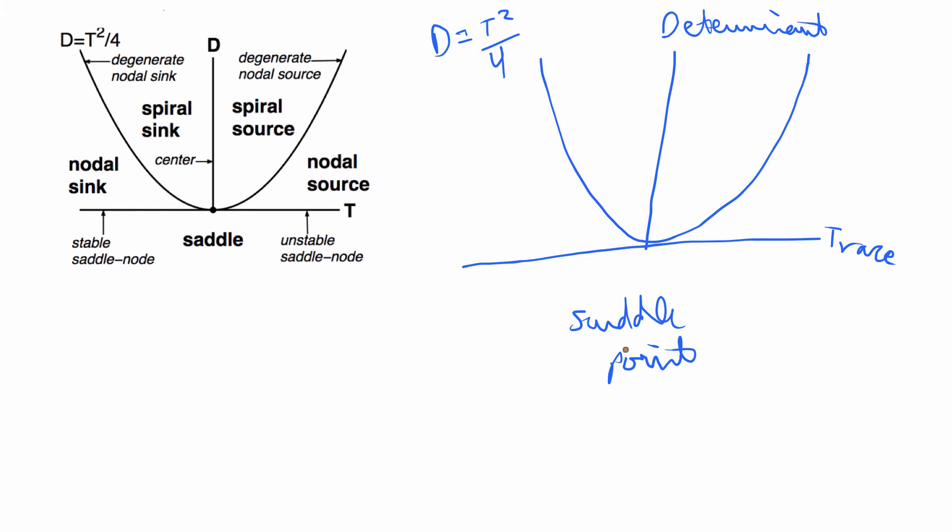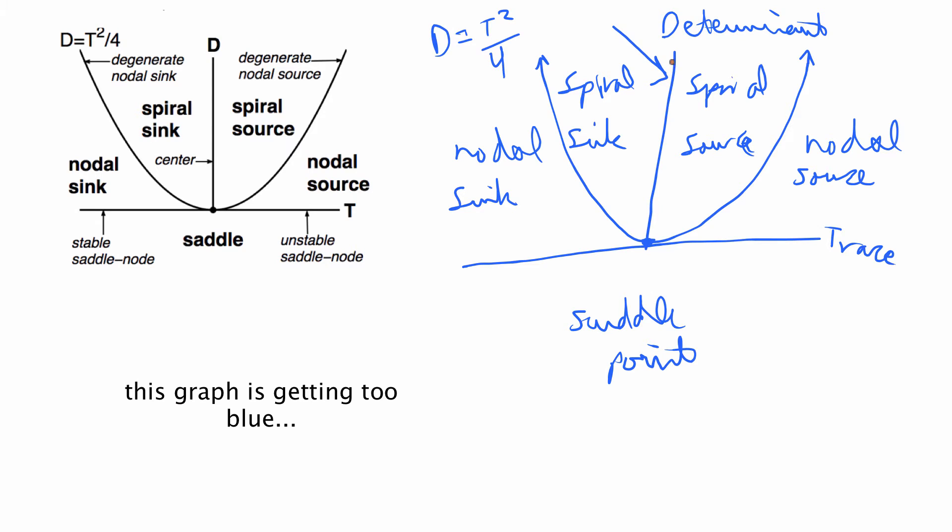And so we already said that any negative determinant is a saddle point and then we have that the nodals are below the parabola. And anytime a trace is positive, you're going to have a source. And anytime the trace is negative, you're going to have a sink. And then what's inside the parabola are spirals. And then you also have border cases. So if something is on this line, which is the determinant axis, then it's going to be called a center.